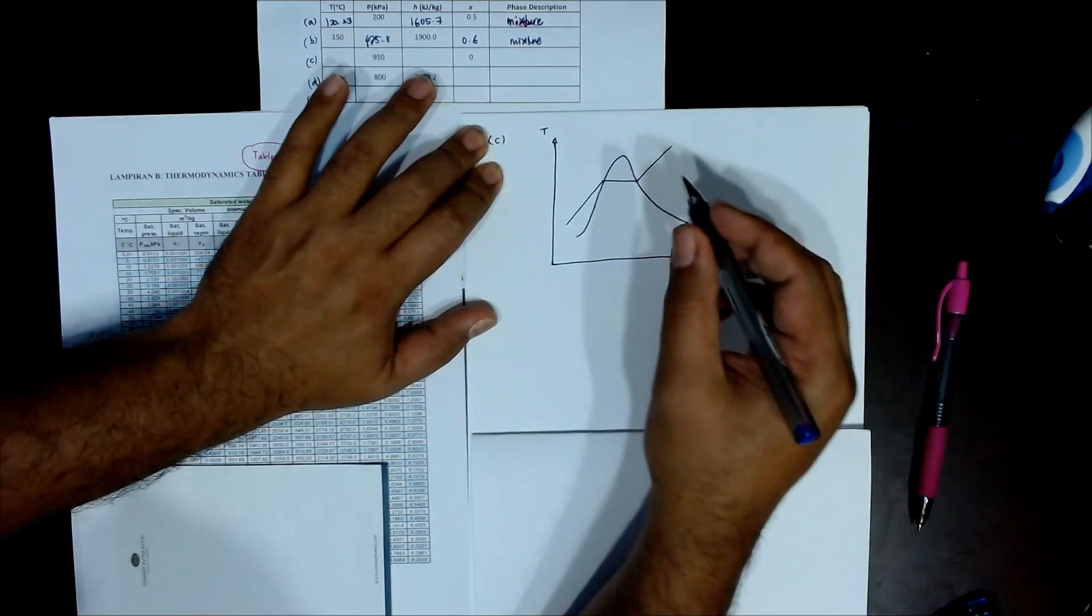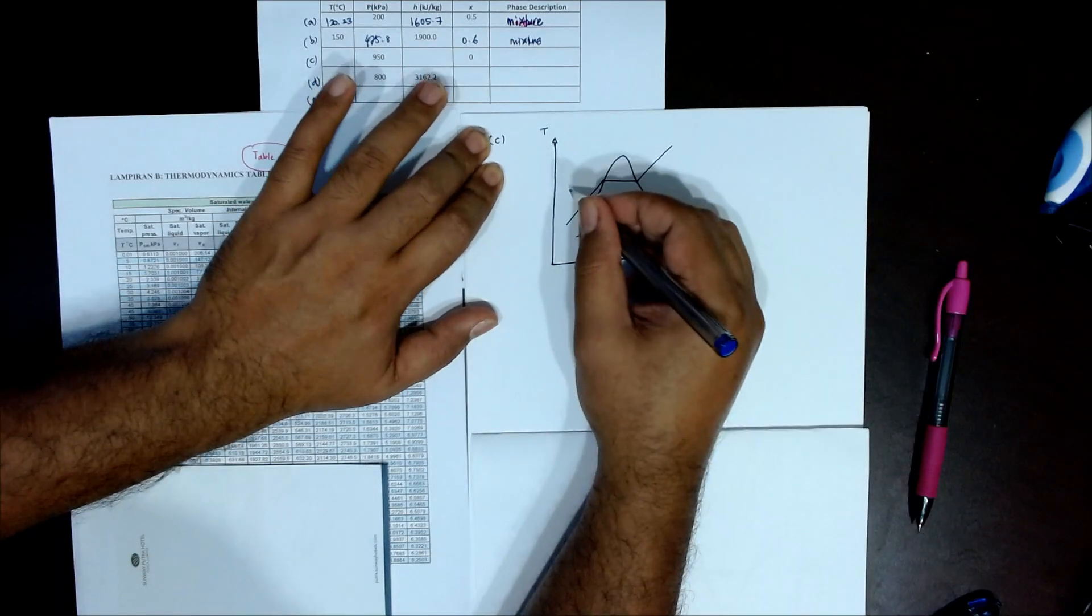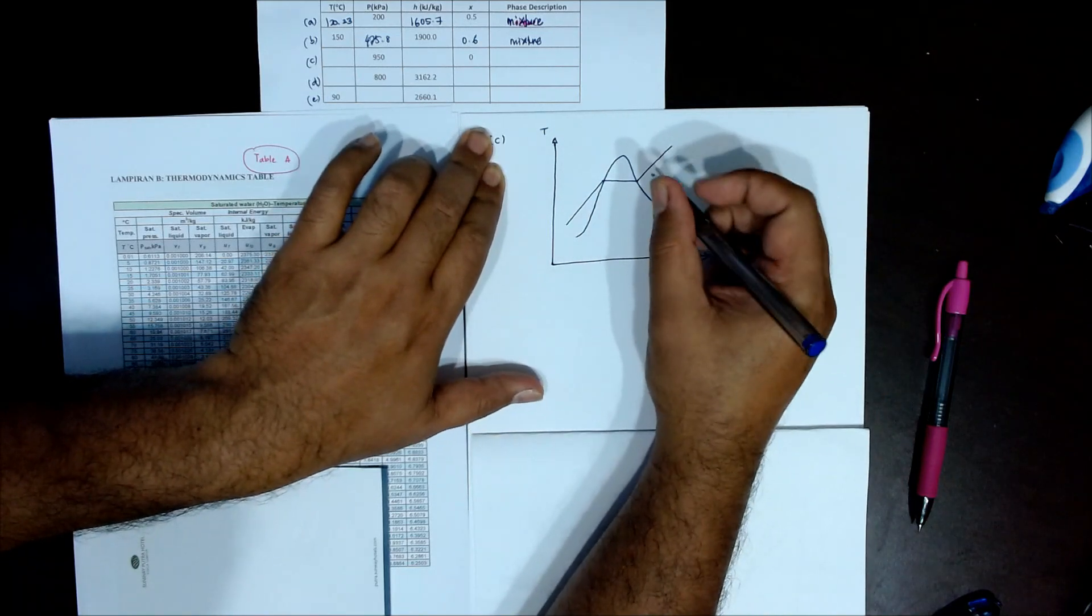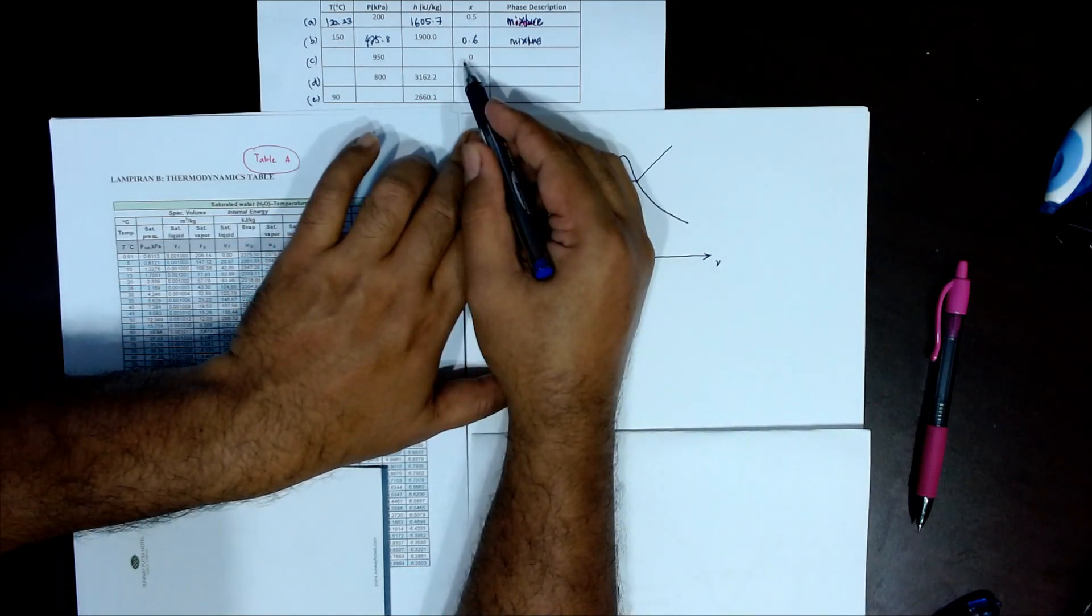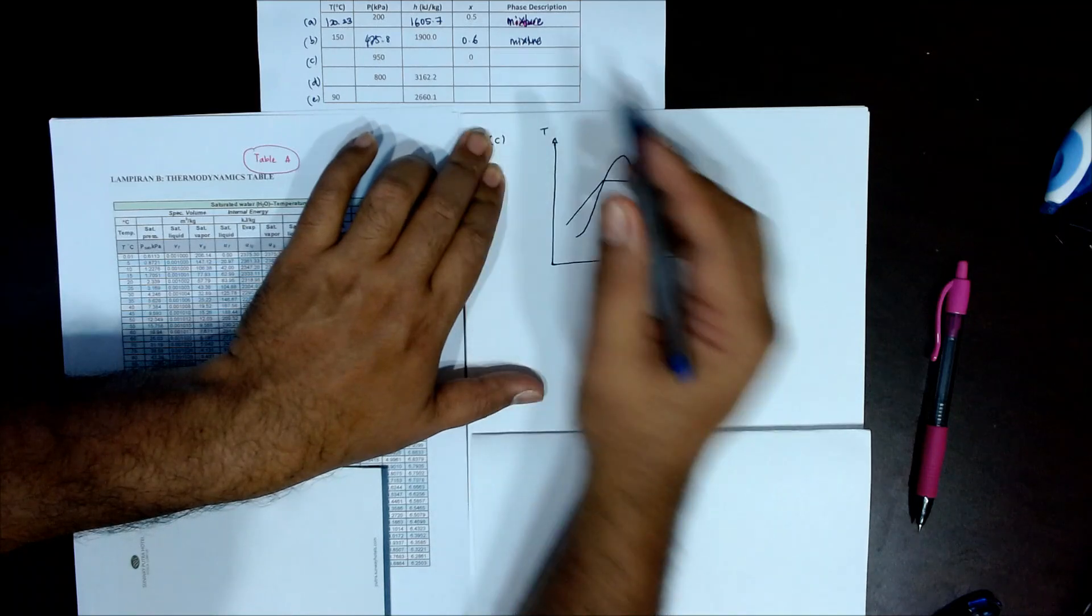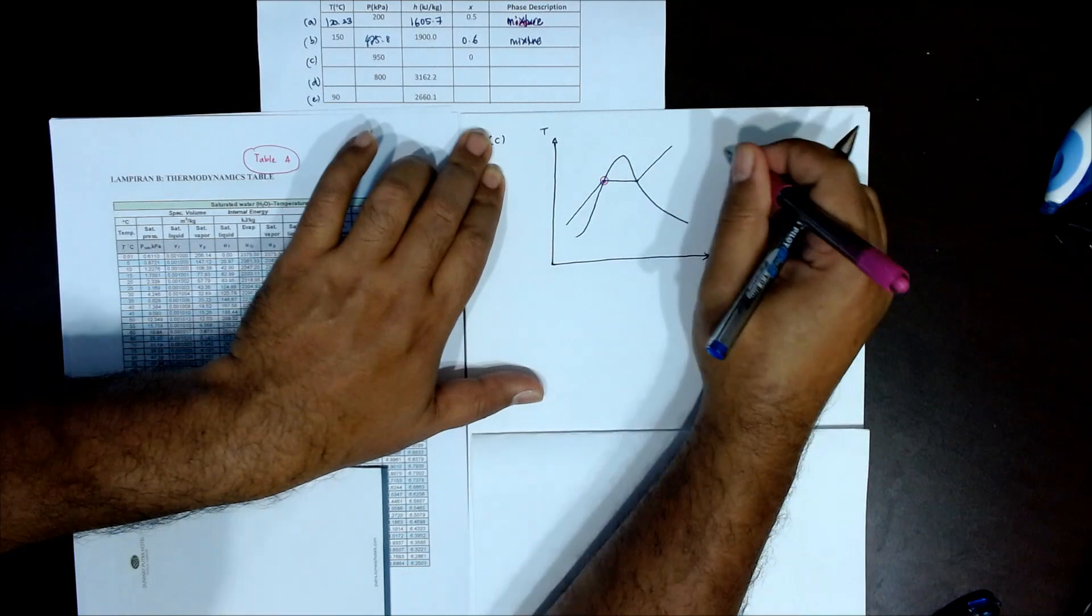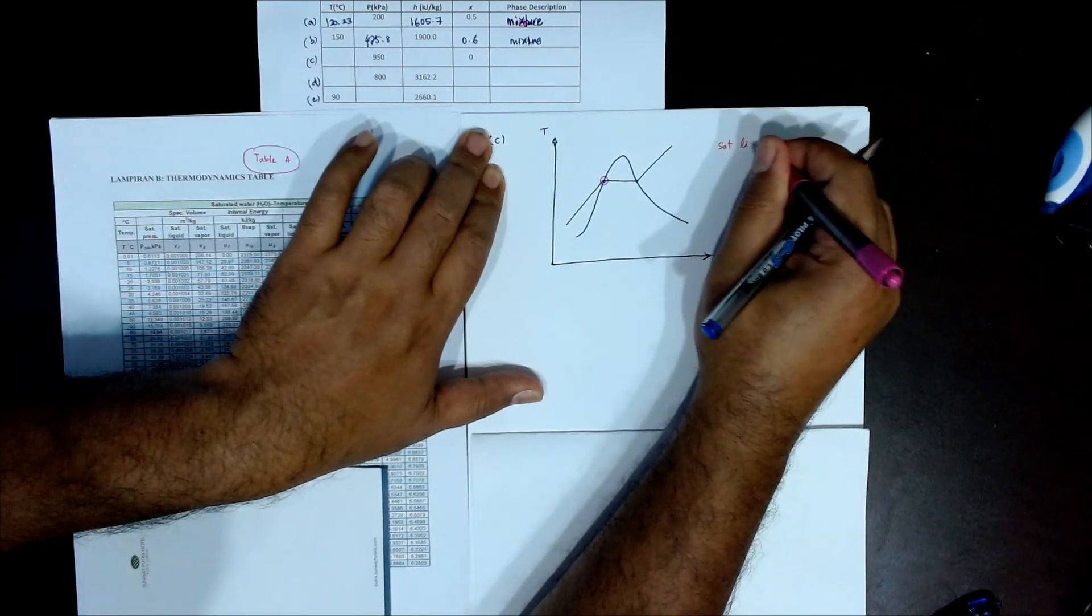This is the temperature line. Don't forget about the temperature that they give you - X equals 0. Very simple. X equals 0 is here, so it's saturated liquid.